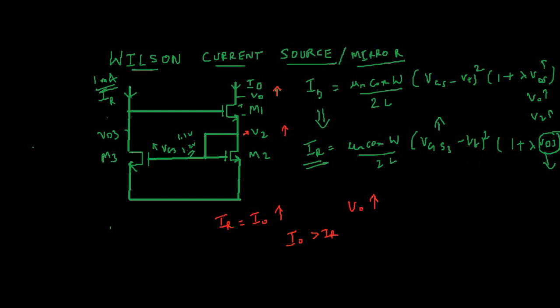The current is constant hence the drain voltage of M3 reduces. This voltage is also connected to gate of M1, so the gate voltage of M1, that is V_GS1, decreases.